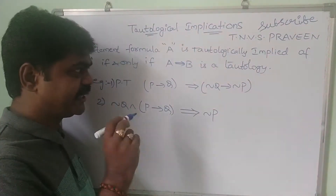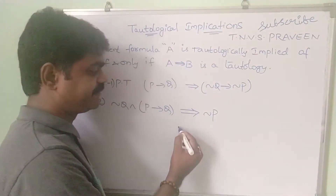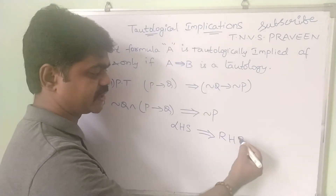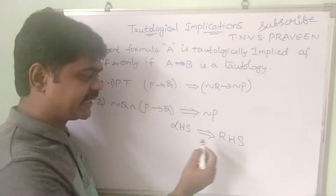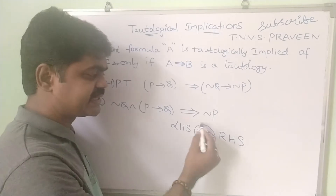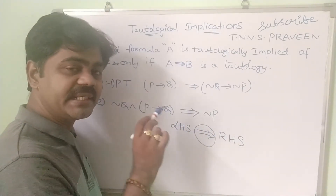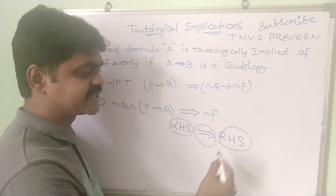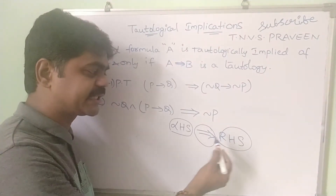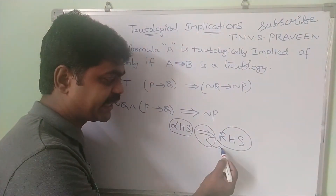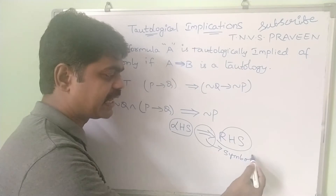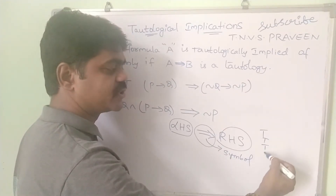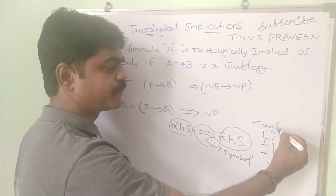One important thing to remember: when we write LHS implies RHS, this implies symbol is not a connective — it is just a symbol in tautological implication. LHS is one statement formula, RHS is one statement formula, and we are proving whether LHS is tautologically implied to RHS. Finally, we should get all true values, which is called a tautology. That is what we need to prove.